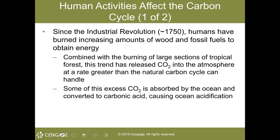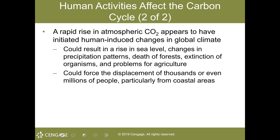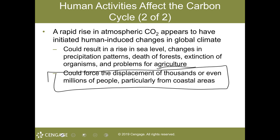There has been an increased rate in the burning of wood and fossil fuels, so we have so much carbon dioxide in the atmosphere at a higher rate than the natural carbon cycle can handle. This excess carbon dioxide is absorbed by the ocean and converted into carbonic acid — this is causing ocean acidification, among other things. It's also changing precipitation patterns, causing deaths of forests, extinction of some organisms, agricultural problems, displacement of people from coastal areas, and the incidence of stronger hurricanes.